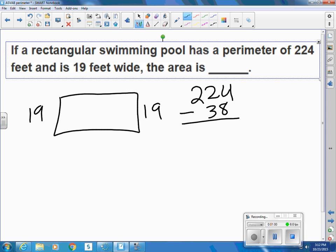So if I subtract 38, 14 take away 8 is 6, 21 take away 3 is 18. So 186 feet are left for the length.